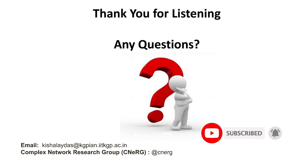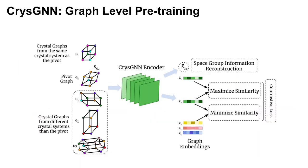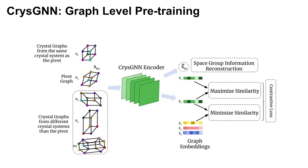Thank you Kishalai for the very interesting talk. We'll now open to questions. One attendee asks: for graph embedding you had a contrastive loss for the pre-training part — what was it for node embedding? The speaker clarifies: it is for graph embedding. The idea is that if two graphs come from the same crystal system, such as a cubic structure, you try to make their embeddings as similar as possible.